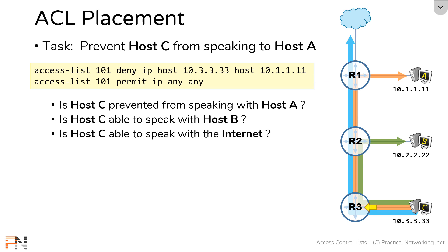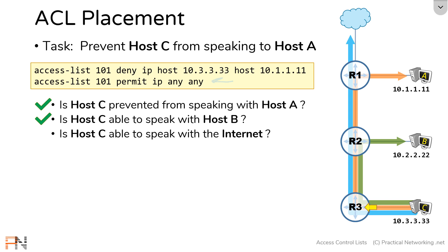Since we're now using an extended access list, the deny statement is only going to match specifically when host C is speaking to host A. Which means host C is indeed prevented from speaking to host A. But the traffic from host C to host B has a different destination IP address — a source of 10.3.3.33 and a destination of 10.2.2.22 — so it's not going to match that deny line. It will instead match our permit IP any any, and be allowed through. The same applies for the Internet — host C can send traffic to the Internet because the destination IP address won't match host A's IP address. So on the first location we applied our extended access list, we have successfully accomplished our goal.